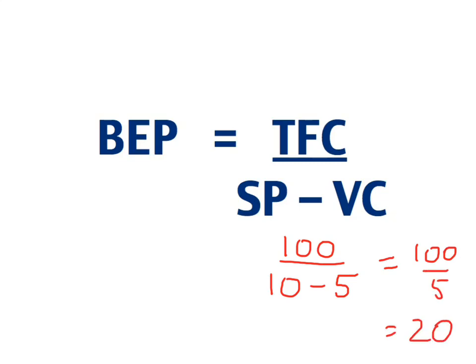Now that 20 means that the business needs to sell 20 units in order to break even. If they sold 19 units or less they'd be making a loss. If they sold 21 units or more they'd be making a profit. But in order to break even, in order to make this project worthwhile, they need to sell 20 products.